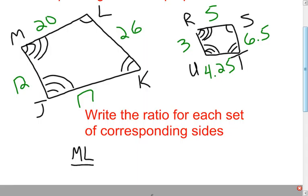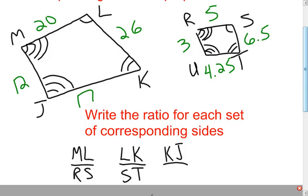Now back to our ratios. I look at the length of segment ML and figure out which segment it matches with by looking at angle M — quadruple arc — and angle L — single arc. In the other quadrilateral, angle R has the quadruple arc and angle S has the single arc, so ML matches with RS. Working around: LK matches with ST (single arc and double arc), KJ matches with TU, and MJ matches with RU.